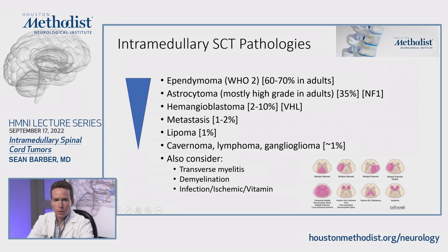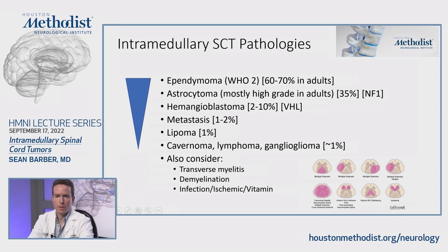After ependymoma and astrocytoma, everything else is more rare. Hemangioblastoma is the most common of those — a vascular neoplasm, mostly sporadic but can be seen in von Hippel-Lindau syndrome. Metastases do occur in about 1-2% of cases. Lipomas can happen inside the spinal cord — benign, fatty, not a true neoplasm. Other very rare entities include cavernoma and intramedullary lymphoma.